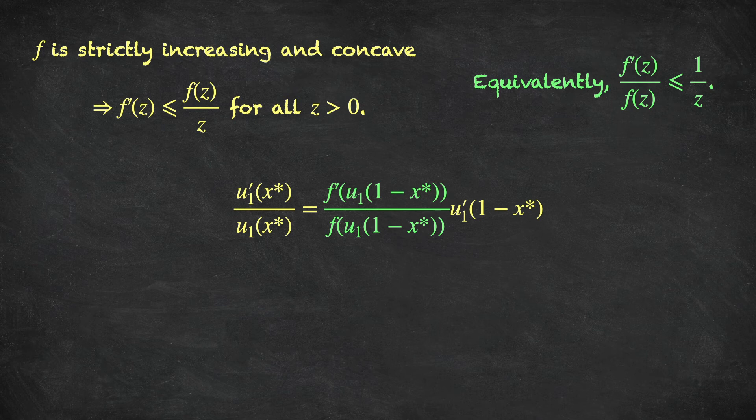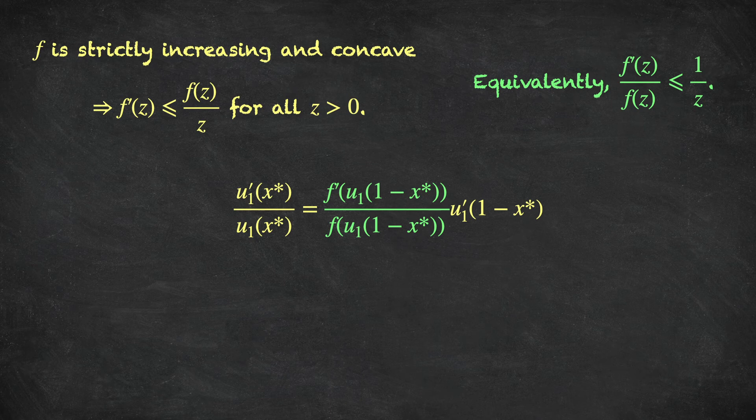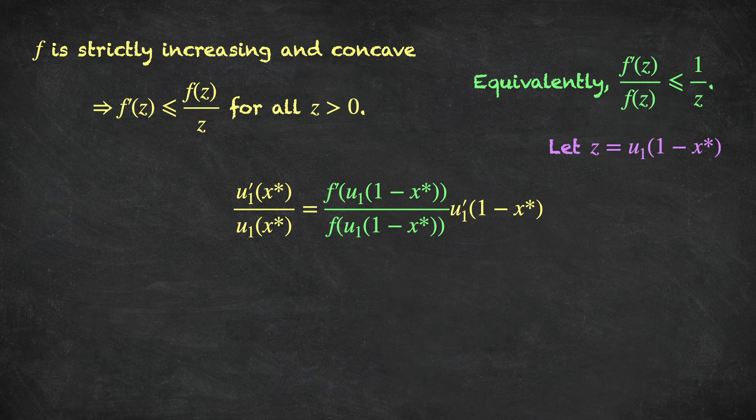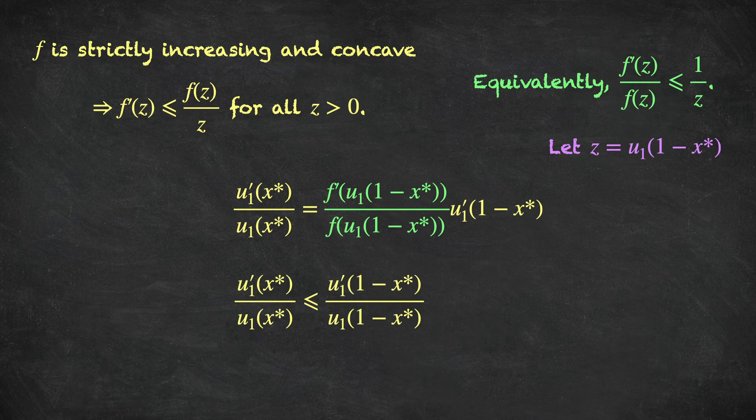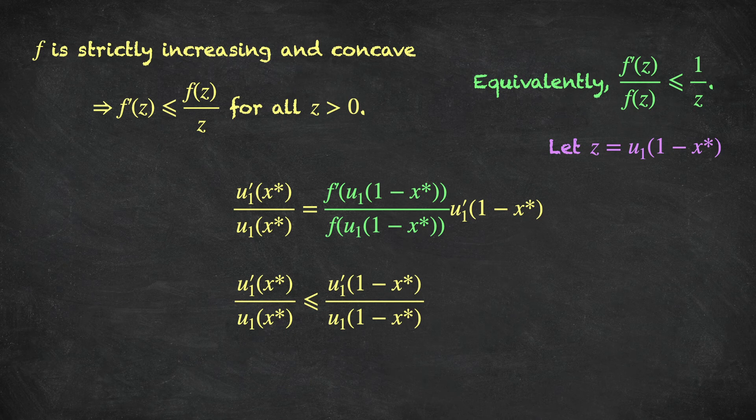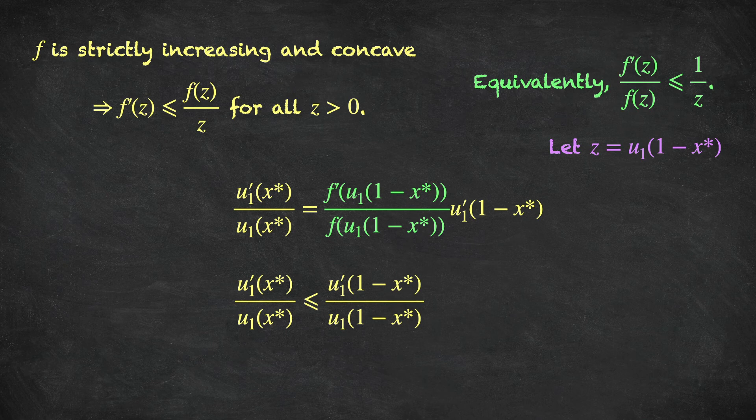Now let's look at the first order condition. This equation must be satisfied by the alternative X star, which is the amount that player one receives, the amount of money that player one receives under the Nash bargaining solution. Colored in green here, you can see a ratio of a derivative of F divided by F, where we're evaluating both of these at the point, the utility of player one for the amount one minus X star. So if we let Z equal player one's utility of one minus X star in the above inequality, then we can get the following inequality, that the ratio of marginal utility of X star for player one over the utility of X star for player one is less than or equal to player one's marginal utility for one minus X star divided by player one's utility for one minus X star.